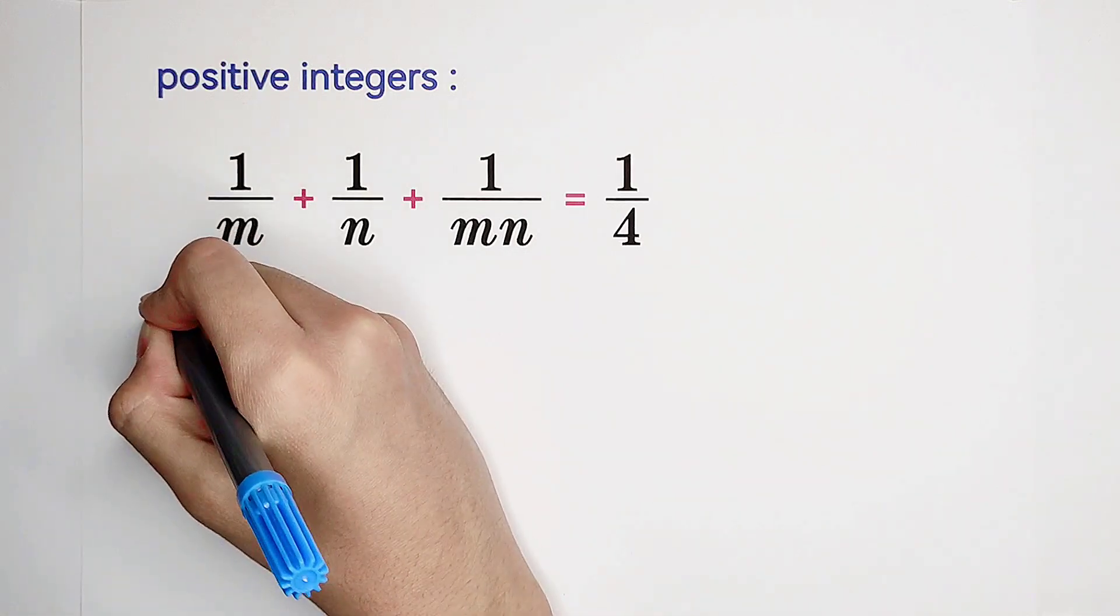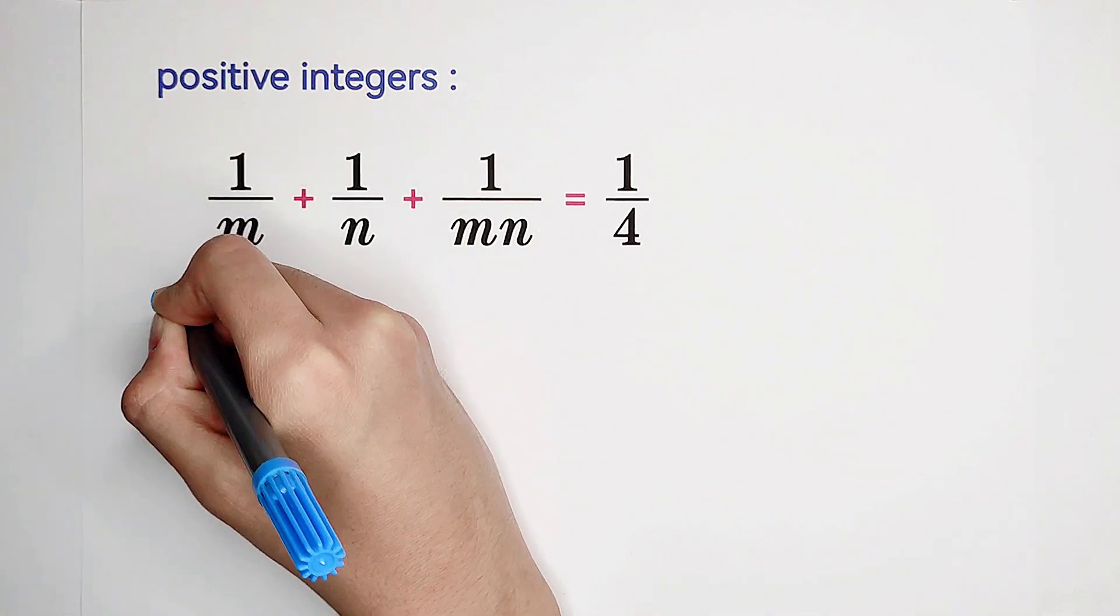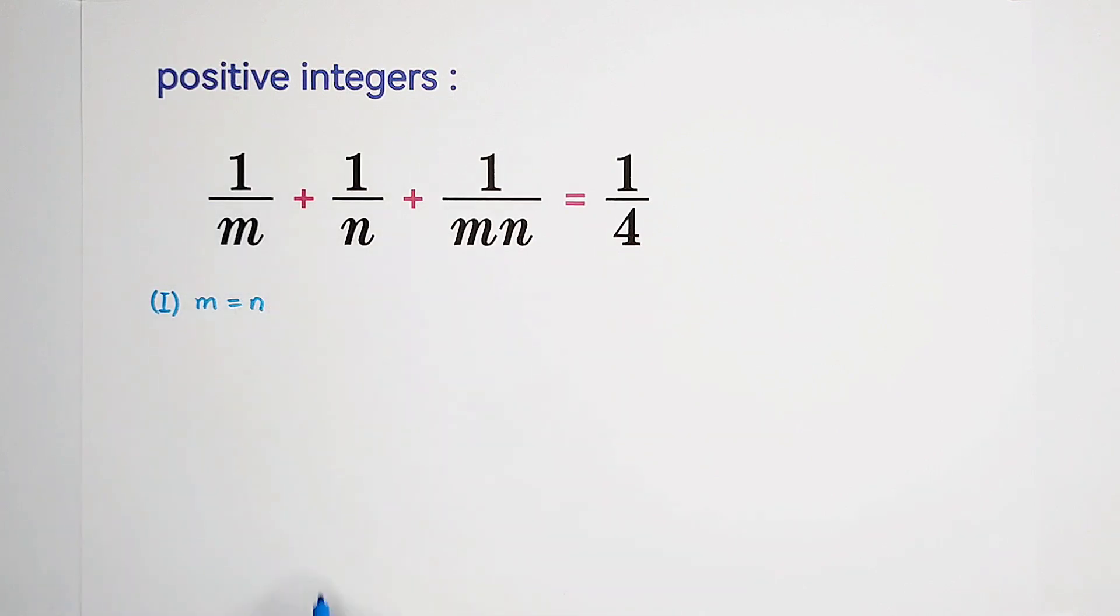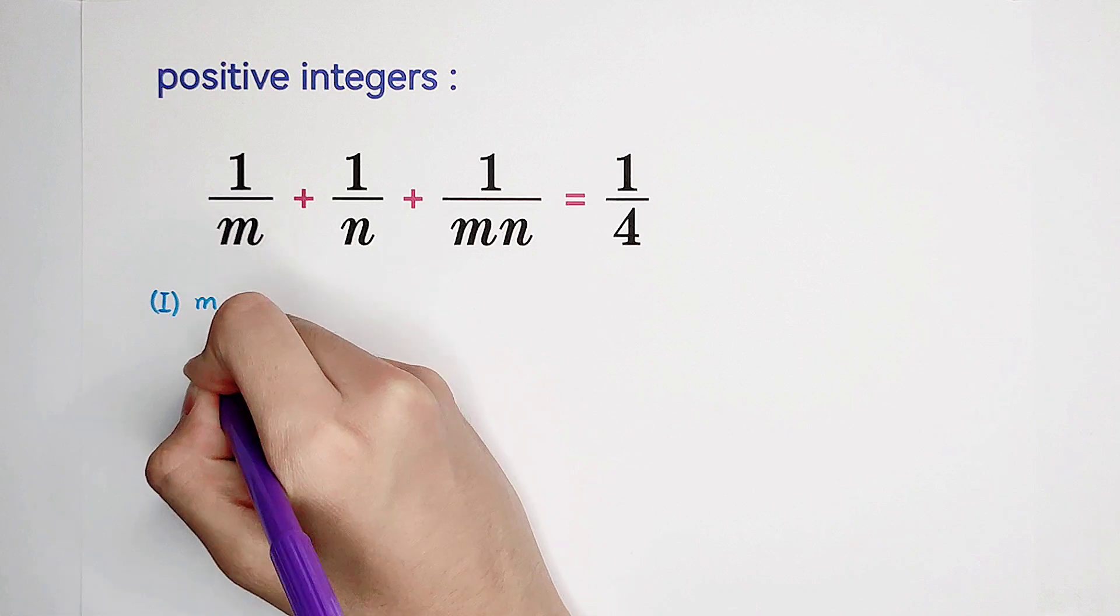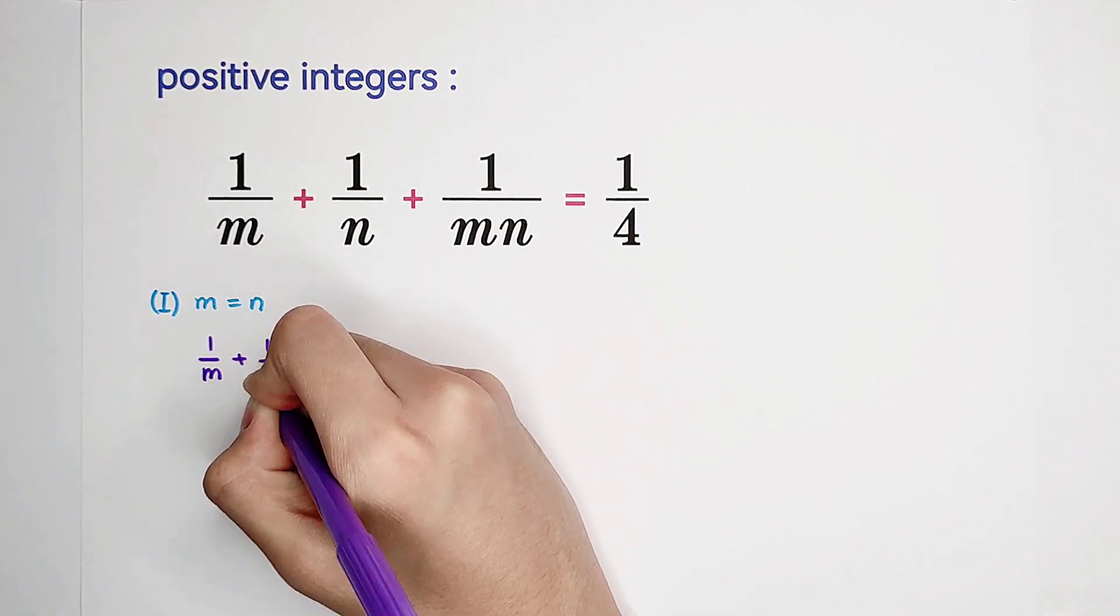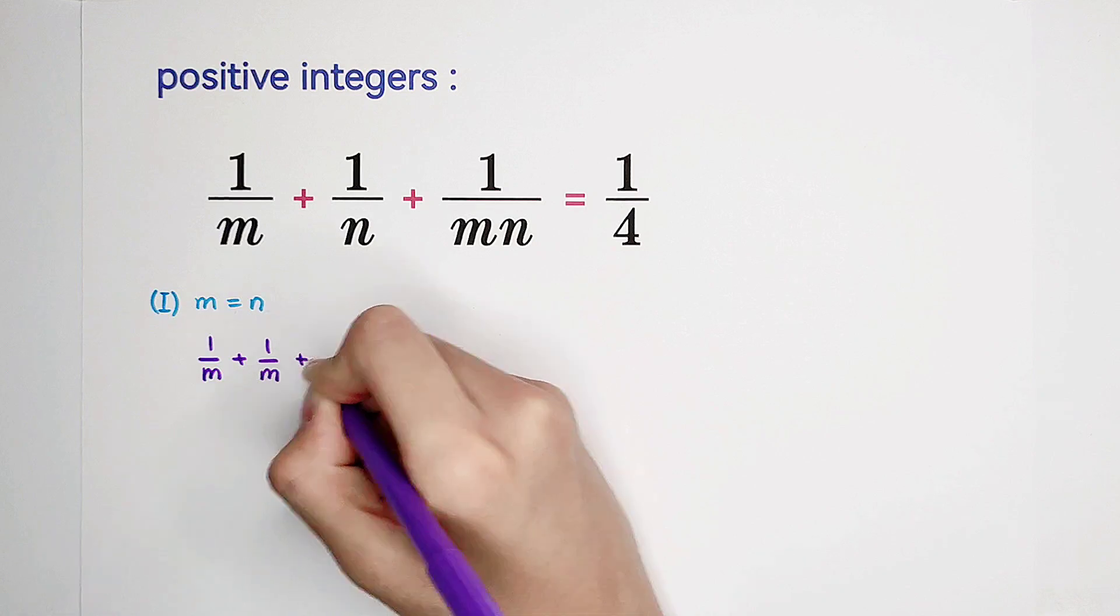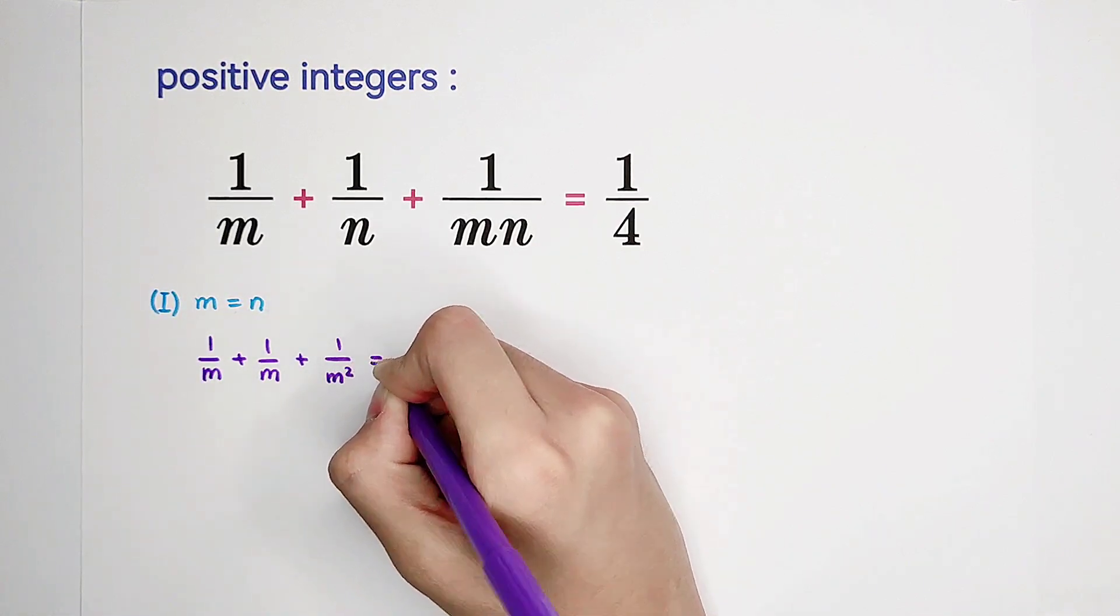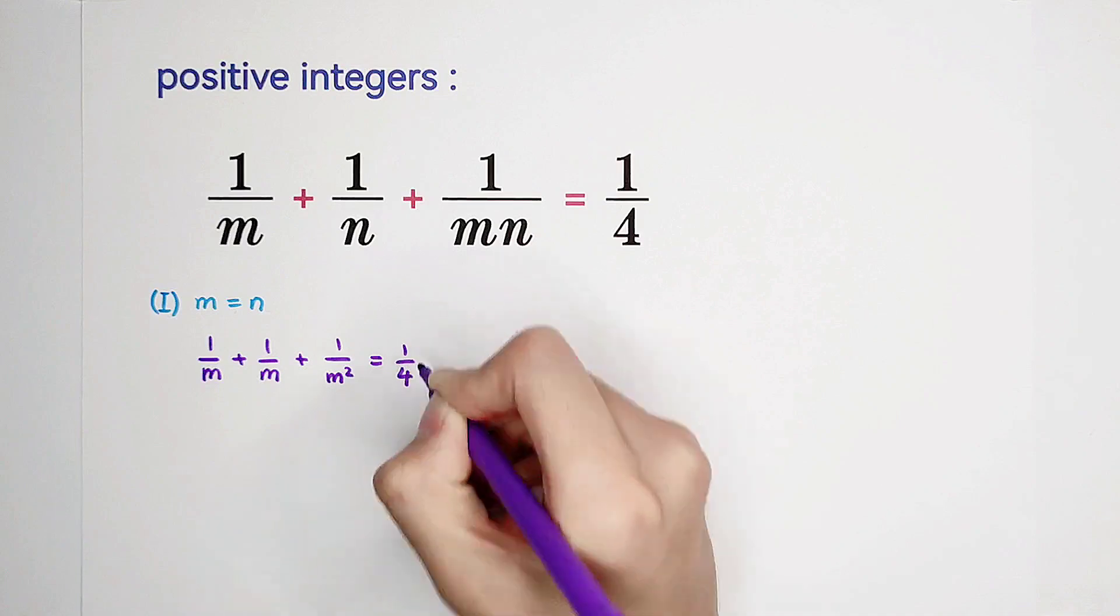In the first case, we'll have a look at the equation when m equals n. If m equals n, the equation is very simple and easy. It's just 1 over m plus 1 over m plus 1 over m squared equals 1 over 4.